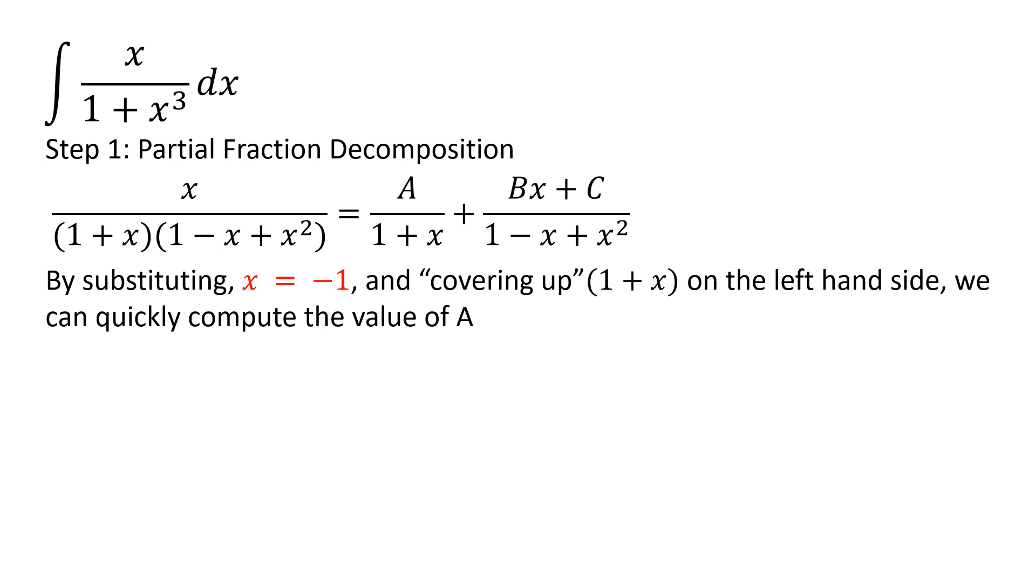I can use the Heaviside method and cover up the 1 plus x on the left hand side while substituting x equals negative 1. This will allow me to quickly compute the value of A and when I do this I find that A is equal to negative 1 third.